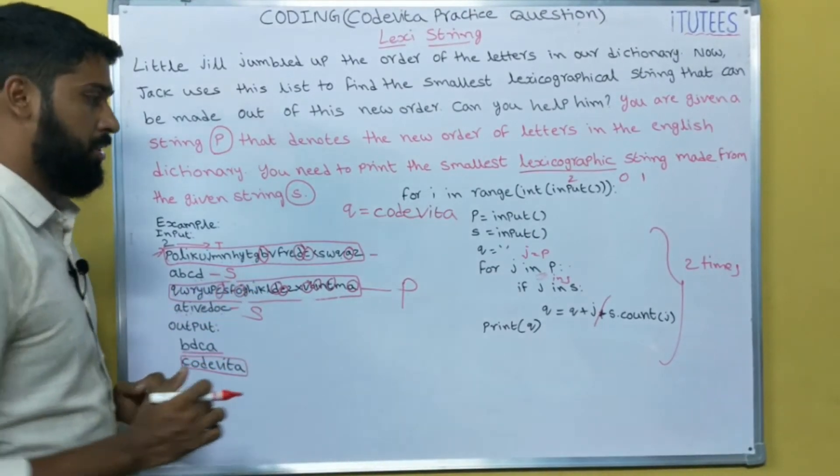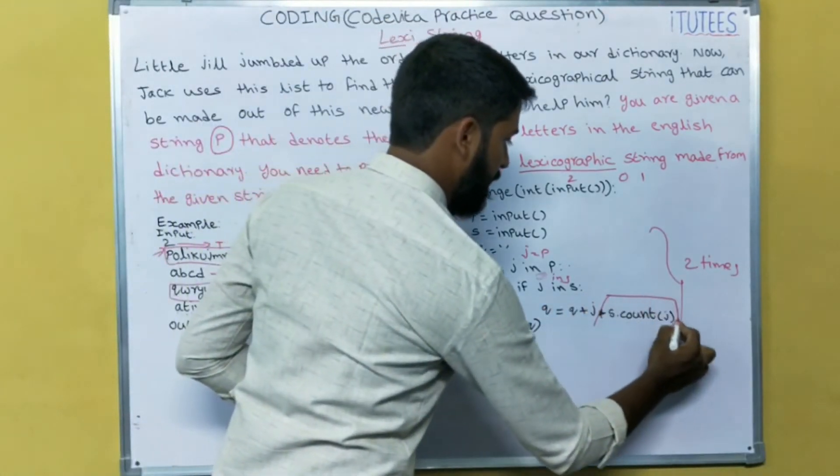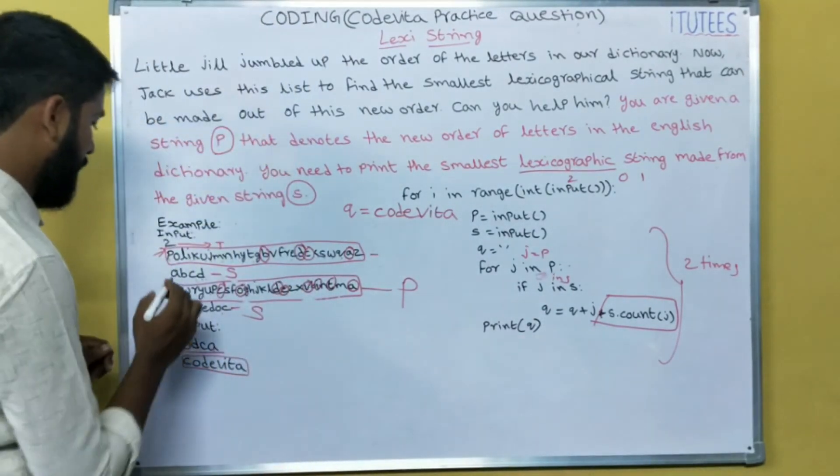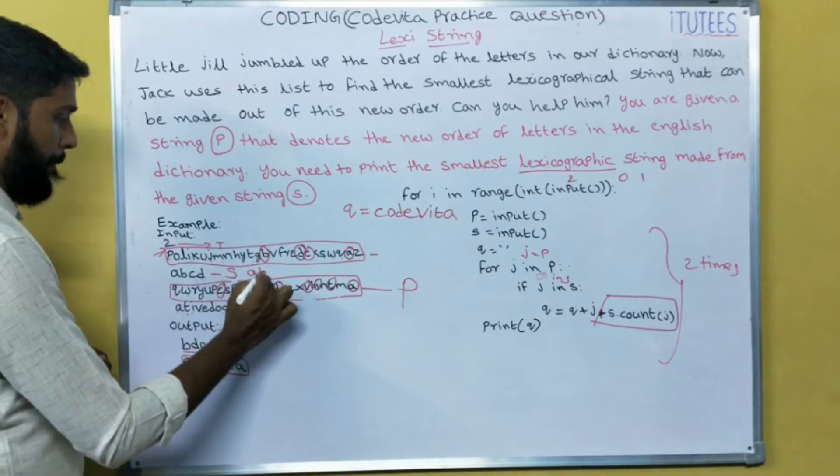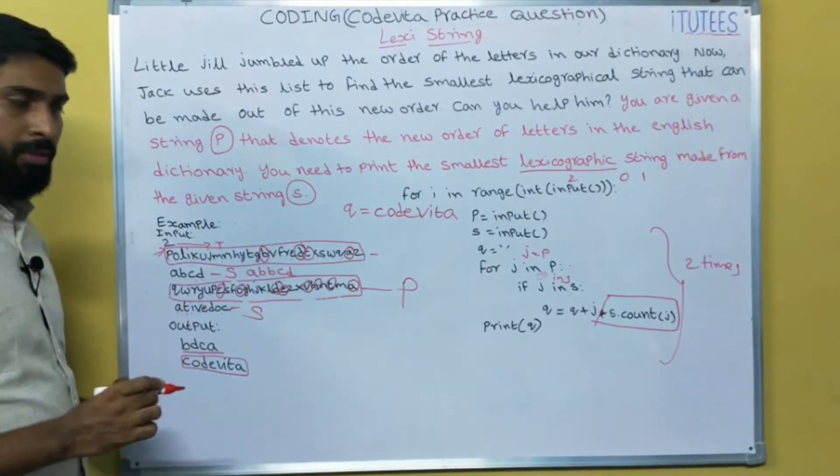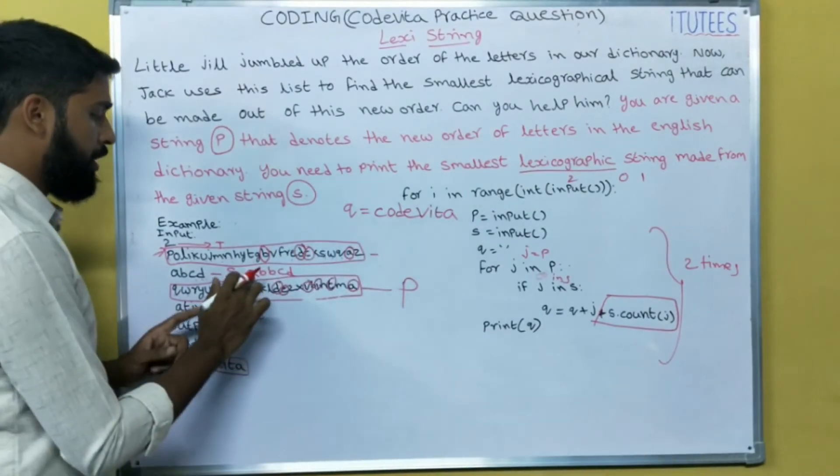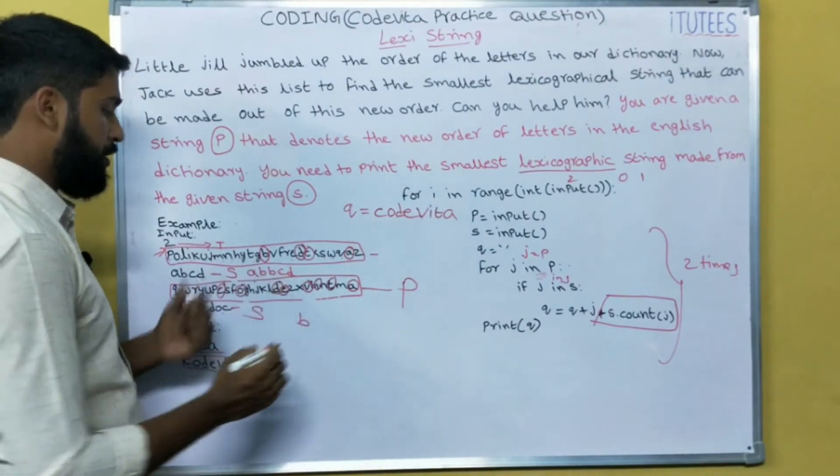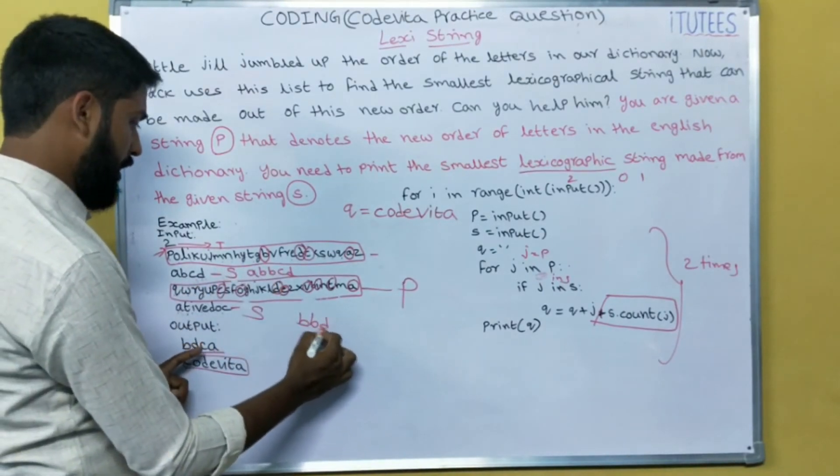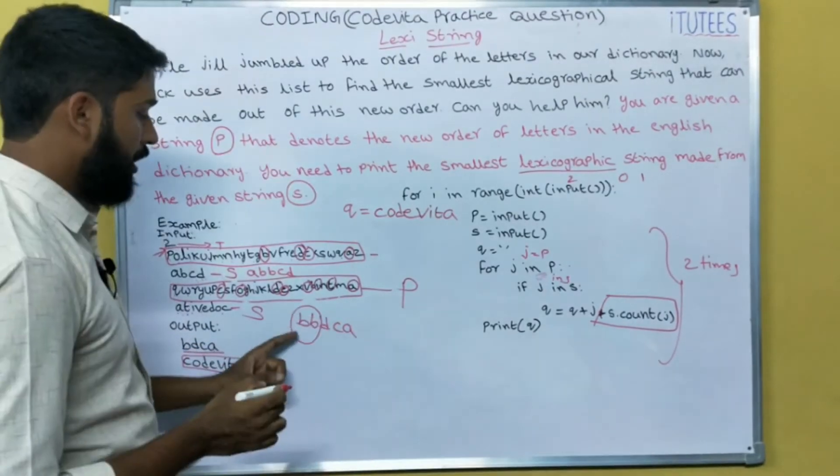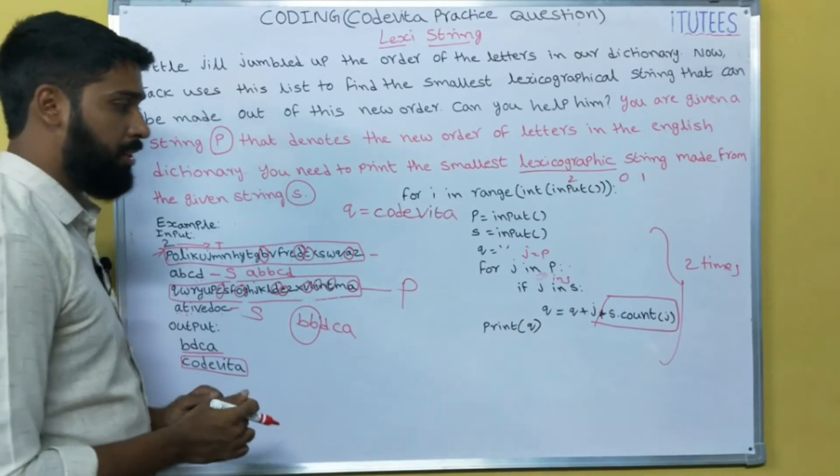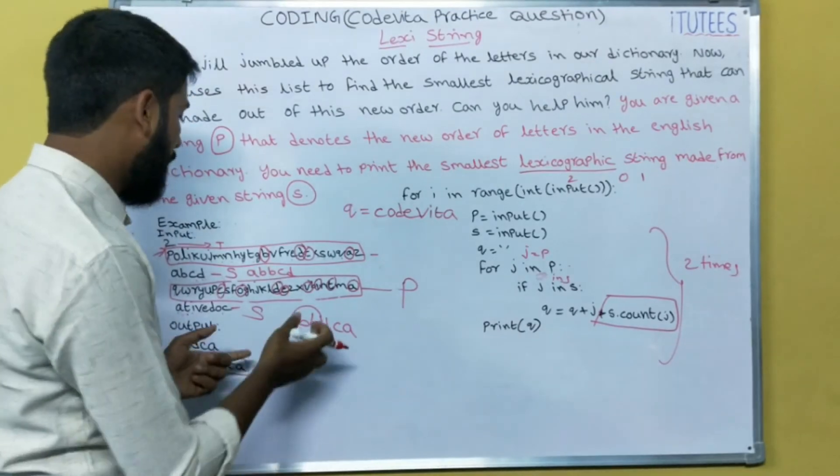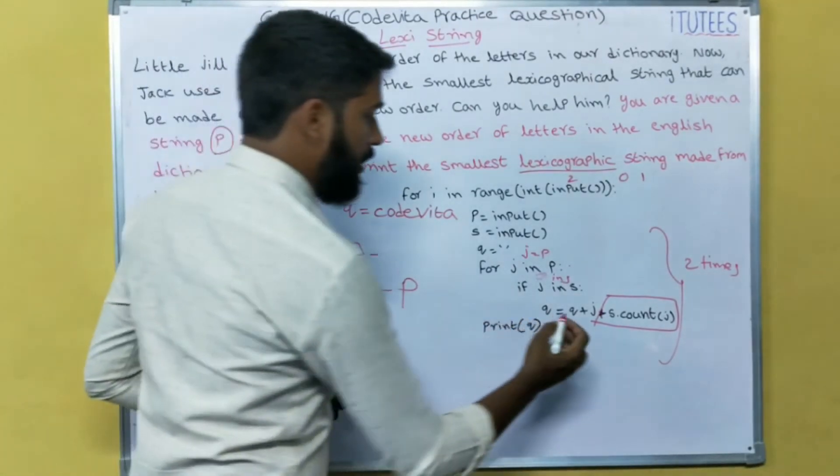So that's it. Now, what is this? S dot count of J. For example, in this, I am giving the input A, B, B, C, D. Then what is the expected output? Without knowing this, A, B, B, C, D. That means if the B is one time, we have print only one time. If it is two times, B, B, D, C, A. So that means if a character is more than one time, then we can append how many times it appears in the S, those many times we are going to append that to the Q.